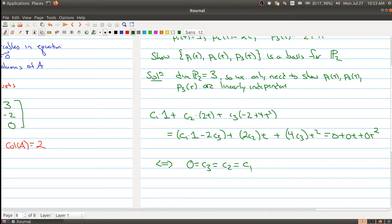So these polynomials are linearly independent. And by the basis theorem, what we have is that P1(t), P2(t), P3(t) is a basis. Since we have three linearly independent elements in a three-dimensional vector space.